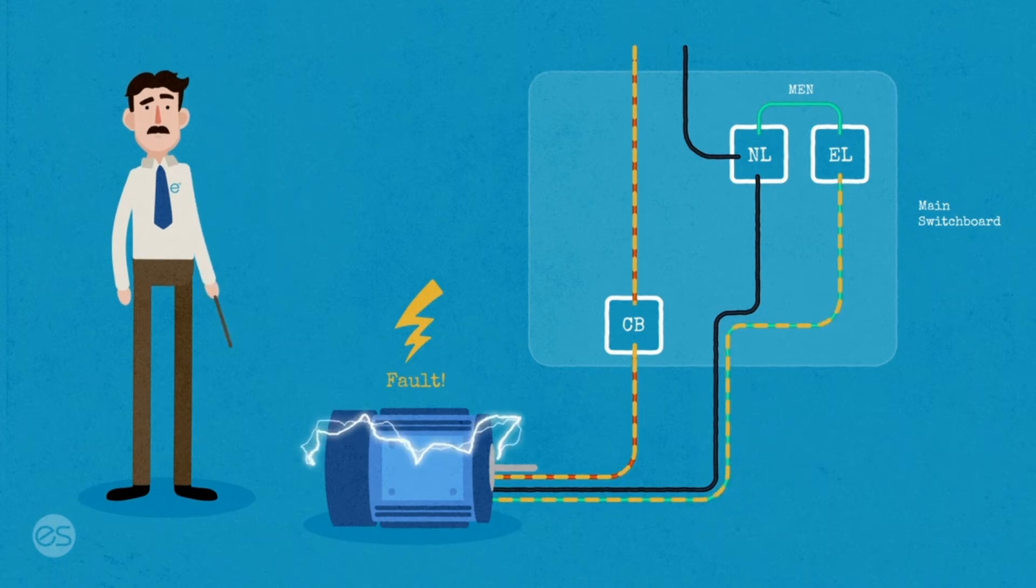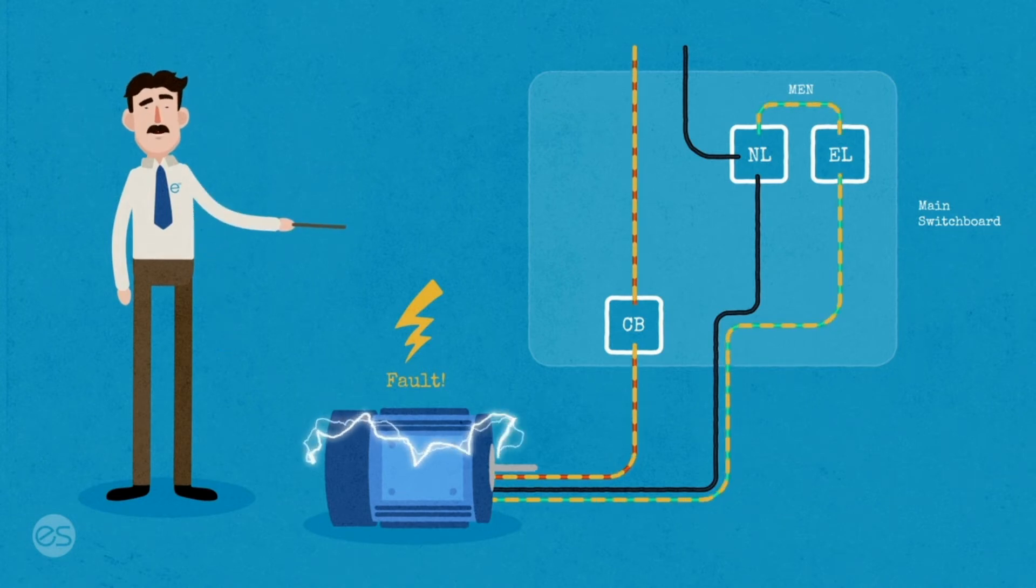So our fault loop current is heading back to the switchboard. In our switchboard, it flows from our earth link to the main neutral link. Once there, it exits out to the supply neutral.